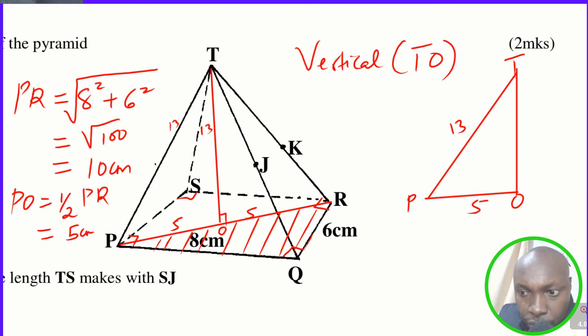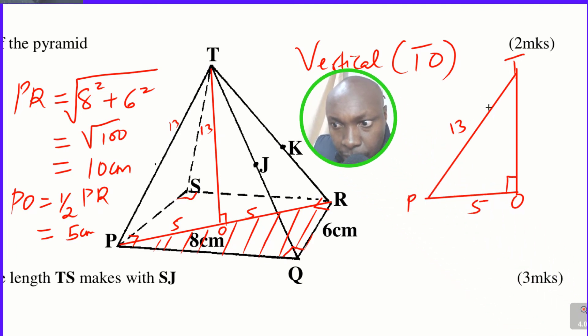So this will enable us to get the perpendicular height or the vertical height of the pyramid. So now using this triangle here, which is a right angle at O, we can use Pythagorean theorem. PT is the hypotenuse, then PO is the base. So TO will be given by 13 squared minus 5 squared.